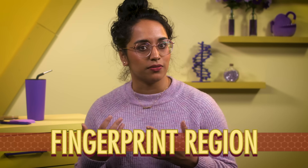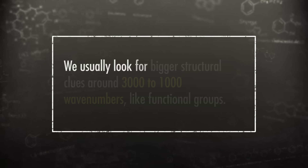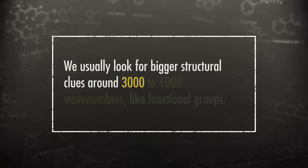The region of an IR spectrum that's most complex is called the fingerprint region — kind of like our fingerprints. This region gives us a clue to more complicated molecules. For example, let's compare our old friends octane and isooctane. Look at the region from 1,400 to 600 wave numbers. Because isooctane has more complicated connections between atoms, its fingerprint region is more complicated. But aside from this kind of comparison, it's pretty hard to interpret fingerprint regions.